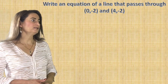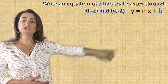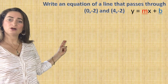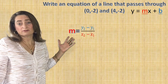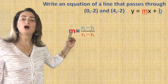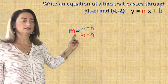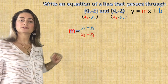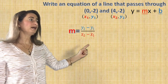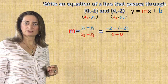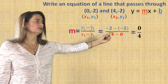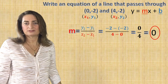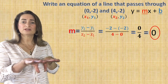Write an equation of a line that passes through (0, negative 2) and (4, negative 2). Always the equation is y equals mx plus b, where m is the slope and b is the y-intercept. To find the slope, I'll use the change in y divided by the change in x. Name the first coordinate x1, y1 and the second x2, y2. You end up with negative 2 minus negative 2 divided by 4 minus 0. Subtracting a negative is adding, so negative 2 plus 2 is zero, and 4 minus 0 is 4. Zero divided by 4 equals zero — so the slope is zero, which means that's a horizontal line.